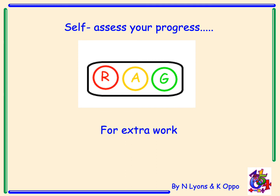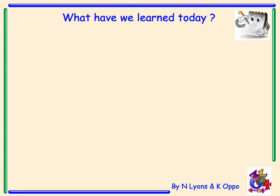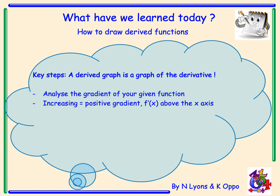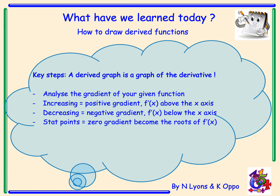Now it's time to self-assess your progress. How did you get on today drawing derived functions? Red, amber, or green? Remember, if you're red, you need to come and talk to your teacher. Key steps: a derived graph is a graph of the derivative. First, analyse the gradient of your given function. Increasing equals positive gradient — f'(x) is above the x-axis. Decreasing equals negative gradient — f'(x) is below the x-axis. Stationary points equal zero gradient, and they become the roots of your derived graph.